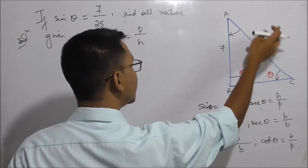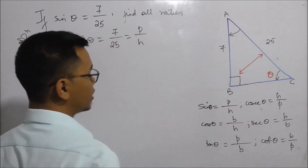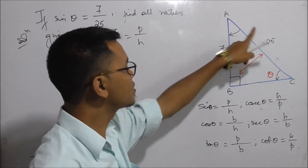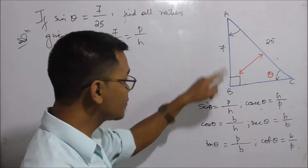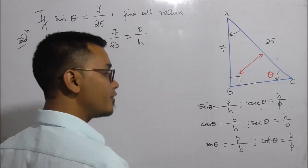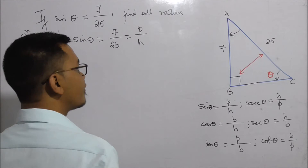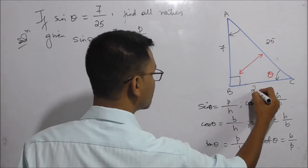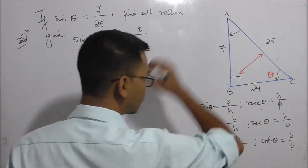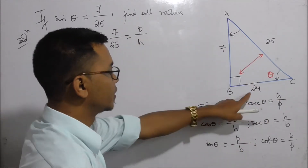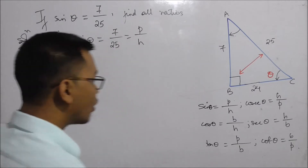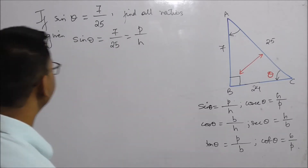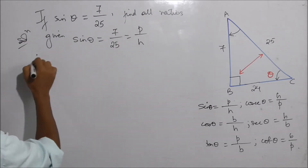25 squared is 625, 7 squared is 49, and 625 minus 49 is 576. The square root of 576 is 24. So the base is 24.